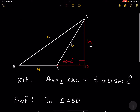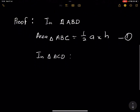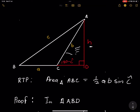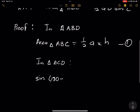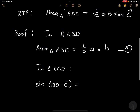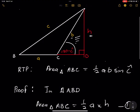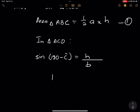Now I'm going to go into the smaller triangle, which is ACD. In triangle ACD, if we take the sine of angle C — which is actually 180 minus C — that gives us the height divided by the hypotenuse. Remember, it's opposite over hypotenuse. Our hypotenuse is side B, so sine of (180 minus C) equals H over B.